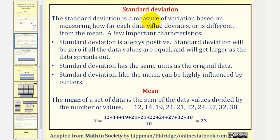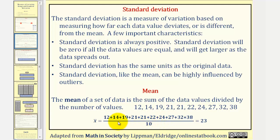Before we discuss how to find the standard deviation, let's review how to find the mean of a data set. The mean is the sum of the data values divided by the number of values — remember, mean is the same as the average. To find the mean of our gas mileage data set of 10 vehicles, we find the sum and divide by 10. The mean, indicated by x-bar, is equal to 23 miles per gallon.